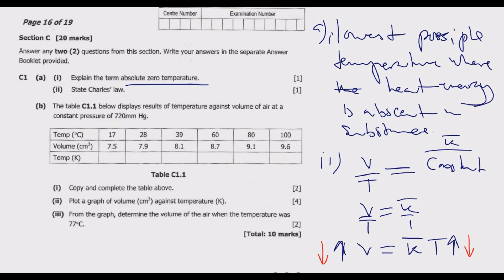So in simple ways, Charles's law states that at a constant pressure, the volume of gas is directly proportional to its temperature in Kelvins. That's what it states.